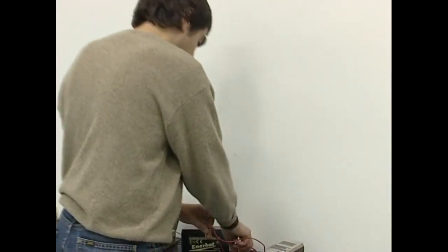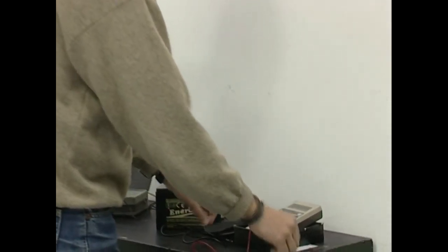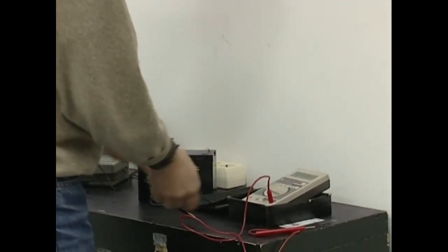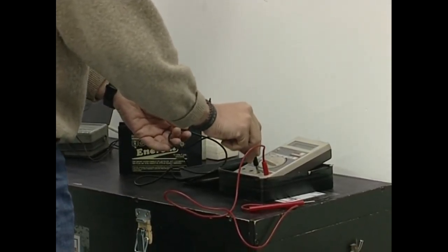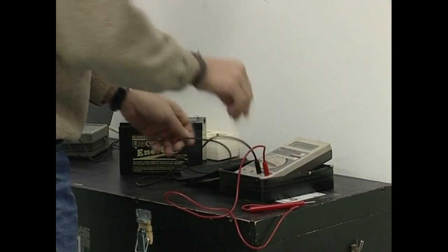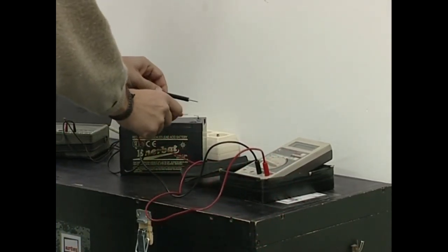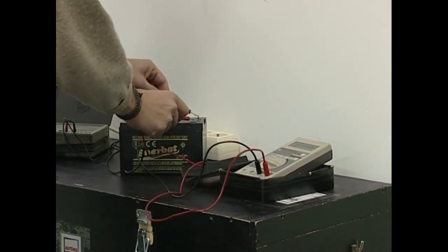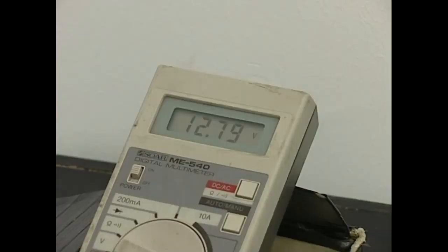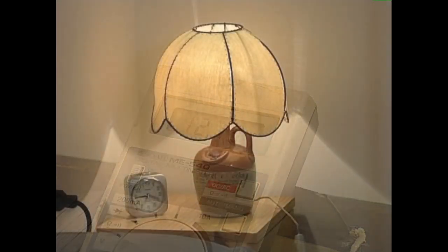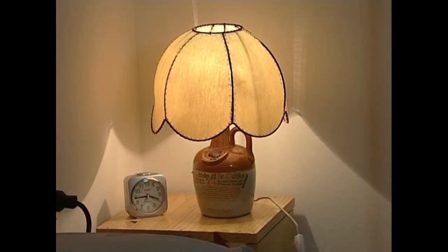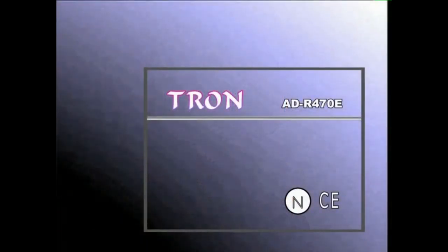Tentsioa, bi eroale elektrikoren edo elektrizitatez kargatutako bi gorputzen arteko potentzial diferentzia, boltetan neurtzen da. Tresna elektrikoek tentsio jakina behar izaten dute behar bezala funtzionatzeko. Tresna elektrikoen ezaugarrien plaketan, V izkiaz adierazten da tentsioa.